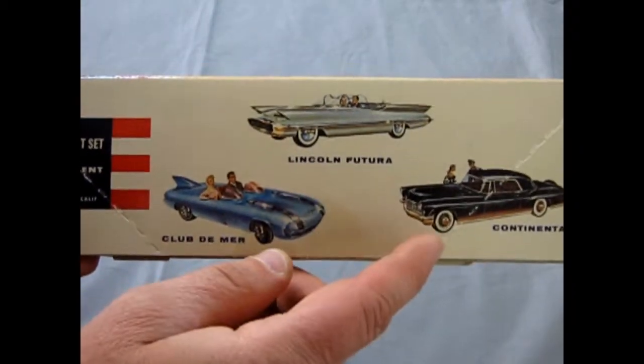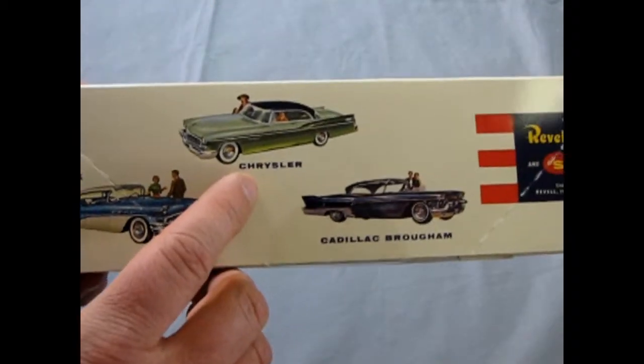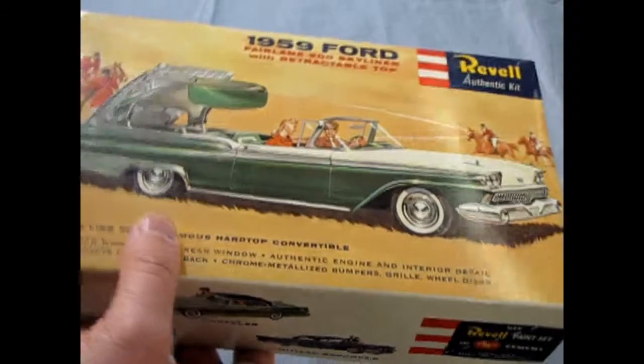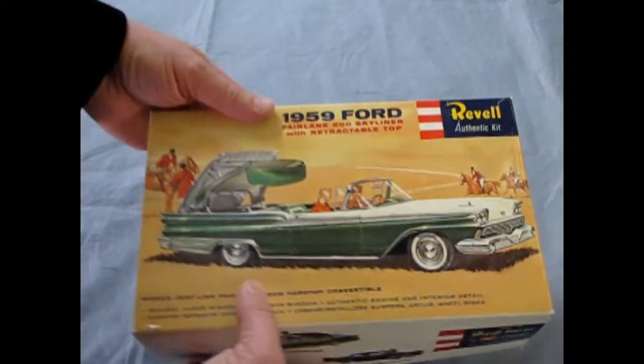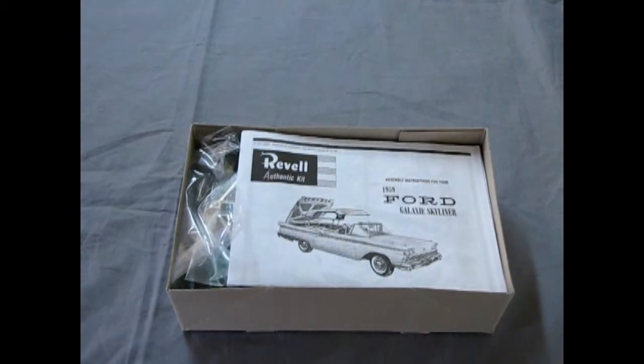And shows some of the other cars in the series. The Club Demur, the Lincoln Futura, the Lincoln Continental. And on this side, the 57 Buick, the Chrysler and the Cadillac Brougham. So I'm just going to open the box here and show you guys the wonderfulness of what's inside.